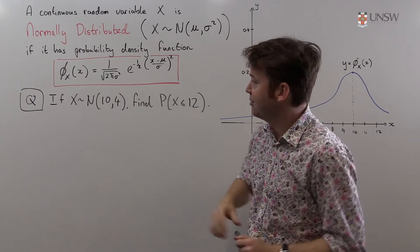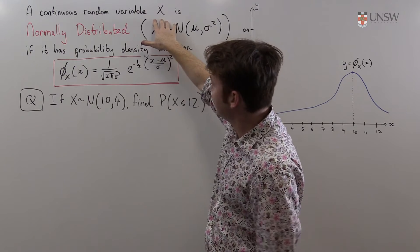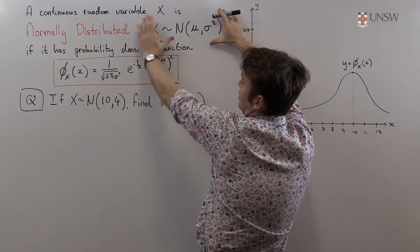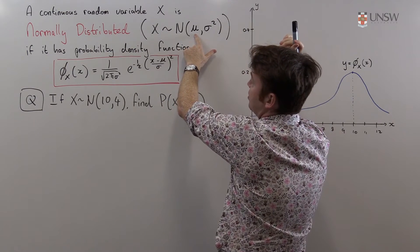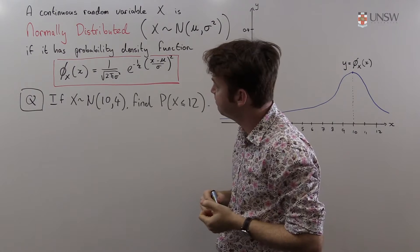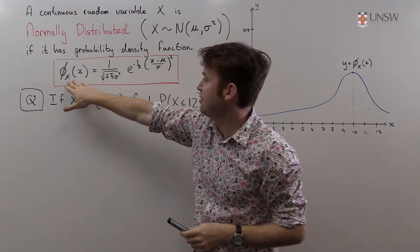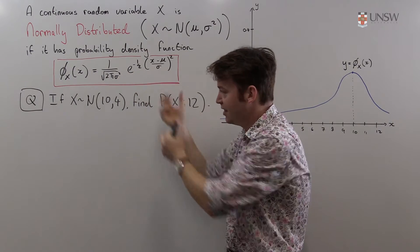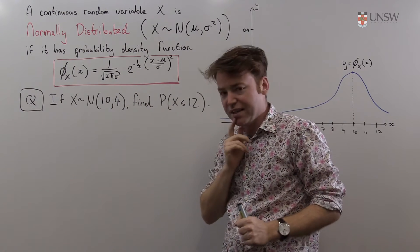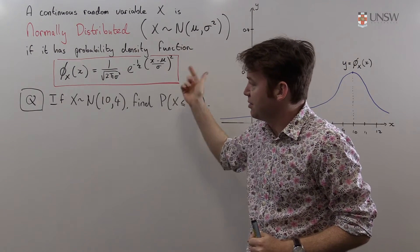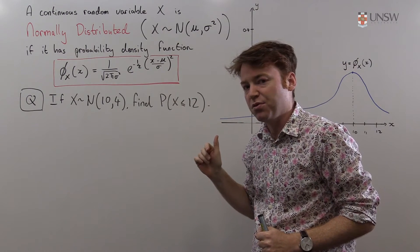What does that all mean? Well a continuous random variable X is said to be normally distributed, and we'd write it like this with its expected value mu and variance sigma squared, if it has probability density function this thing, and this is a total mess. It's very difficult to integrate. In fact there's no way of integrating this precisely and so we have to resort to a numerical method.